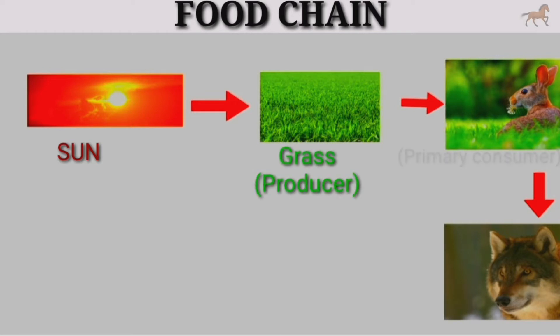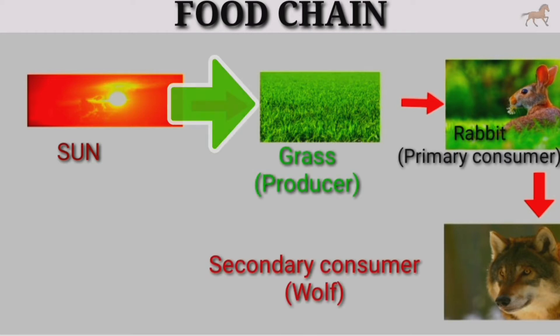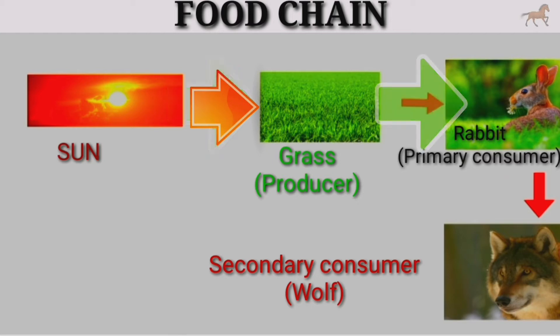To understand this law, let us take a look at a simple food chain. In this food chain, solar energy gets trapped in the form of food by the process of photosynthesis by the grasses.